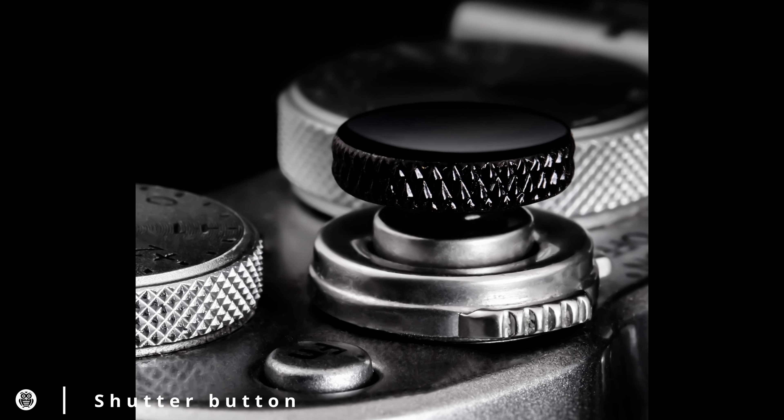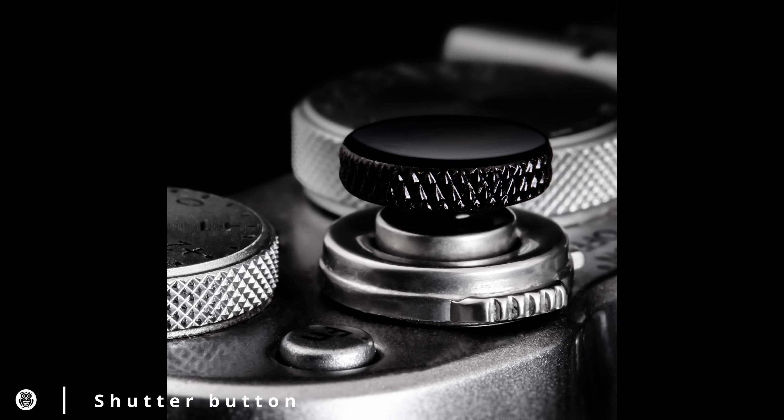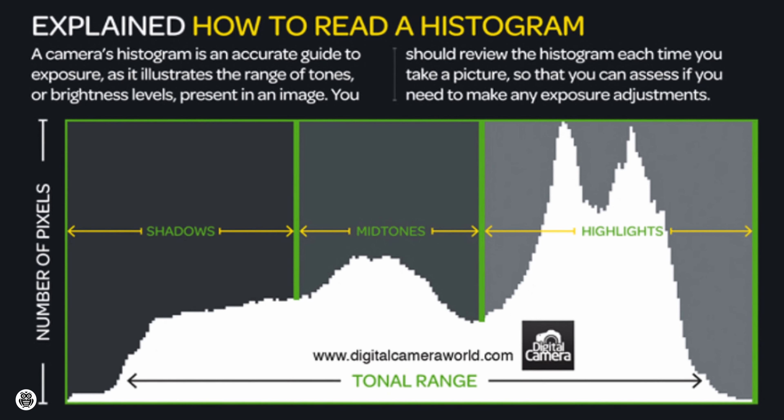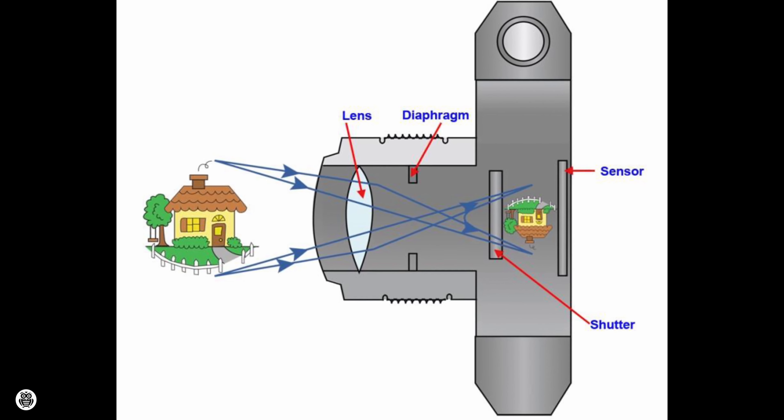In every camera there's a shutter button, and every shutter button has two functions. The first one is to focus and expose your image, and the second one is to take photos. The focus function is achieved by half-pressing the shutter button. In that moment your camera will start to focus depending on your settings and will start to analyze the light in order to get the right exposition. Once you full-press the shutter button, the image will be stored in the memory card.